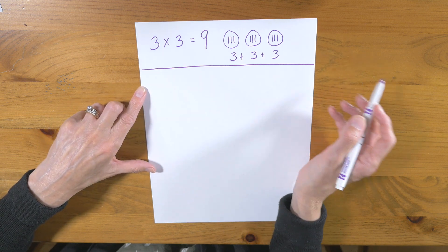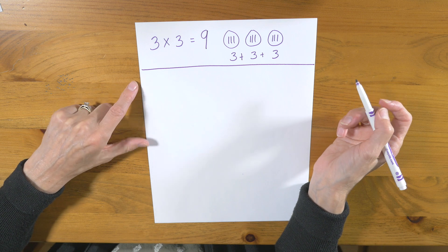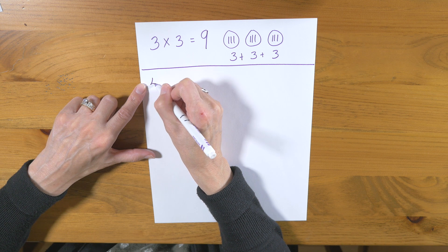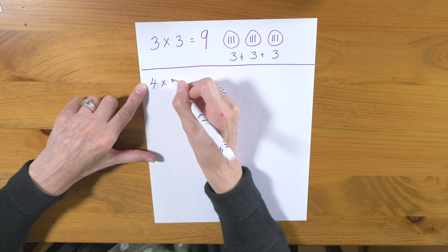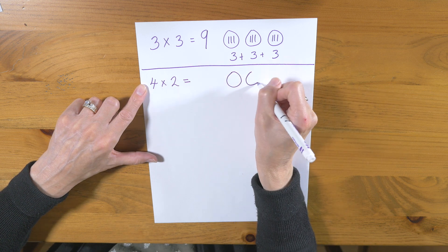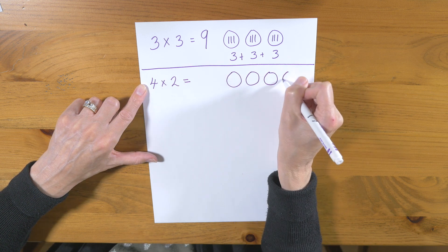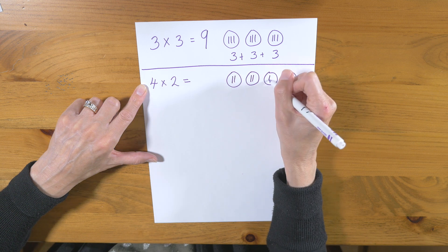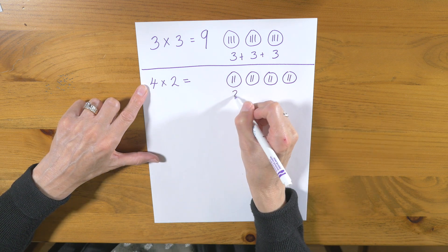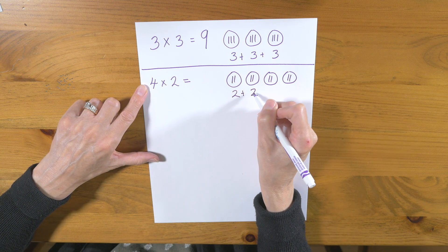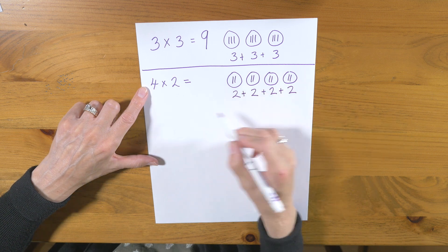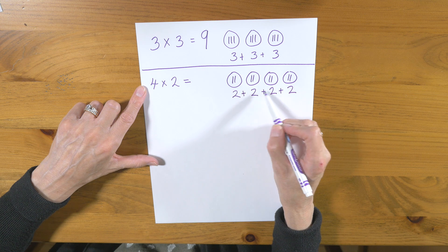Next example. How can we think of another times table as repeated adding? Let's try 4 times 2. So we draw 4 groups with 2 inside. Let's add those up: 2 plus 2 plus 2 plus 2. 4 times 2 is 2, 4, 6, 8.